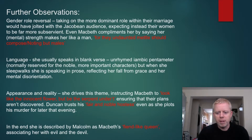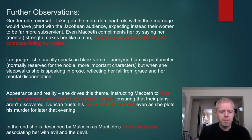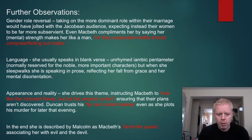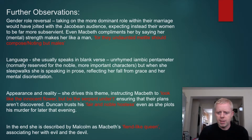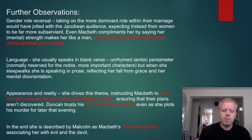Do pause the video and take notes as you go — a 12 to 15 minute video lesson here is about 45 to 60 minutes of revision time. Link her to the theme of appearance and reality — she drives this theme. She instructs Macbeth to 'look like the innocent flower, but be the serpent under it,' ensuring that their plans aren't discovered. Duncan even trusts his 'fair and noble hostess' even as she plots his murder for that very evening. In the end, she's described by Malcolm as Macbeth's 'fiend-like queen,' associating her with evil and the devil.